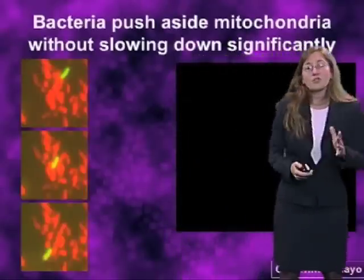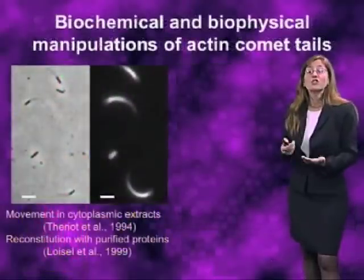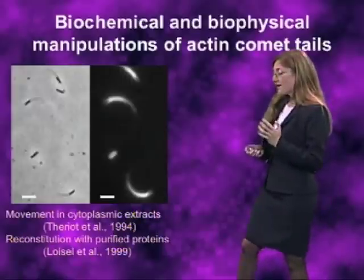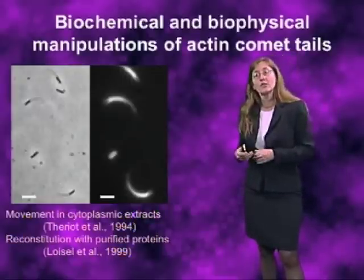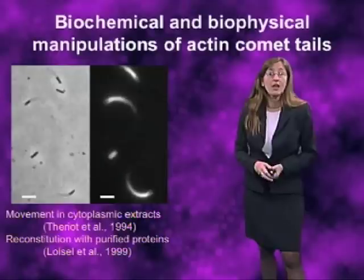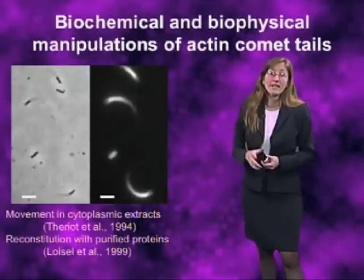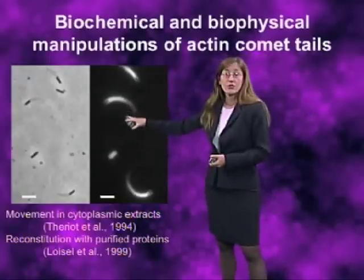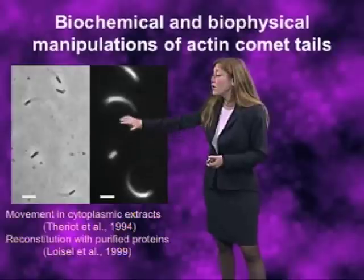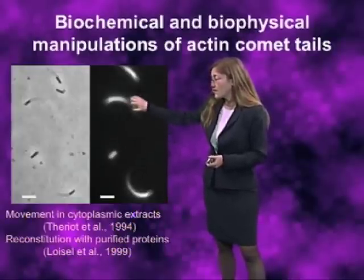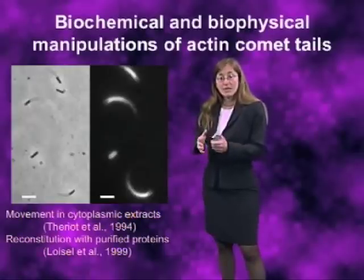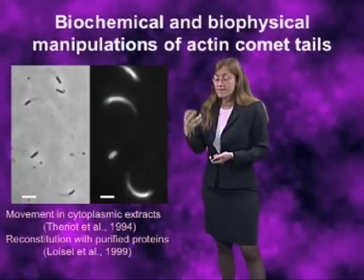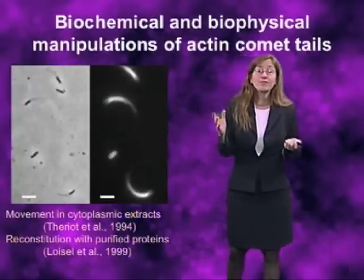Several things about this biological system have proved extremely useful for understanding its function at the level of molecular detail. In particular, we don't need an intact host cell to get the bacteria to move at these very rapid speeds. You can extract cytoplasm from a host cell, drop the bacteria into it, and they'll form comet tails and move. These images show bacteria put into cytoplasmic extract from a frog egg, forming actin clouds and actin comet tails associated with motion. Because you're able to break the cells open, you can add or remove proteins, allowing the field to determine all of the proteins that are necessary and sufficient for this form of movement.